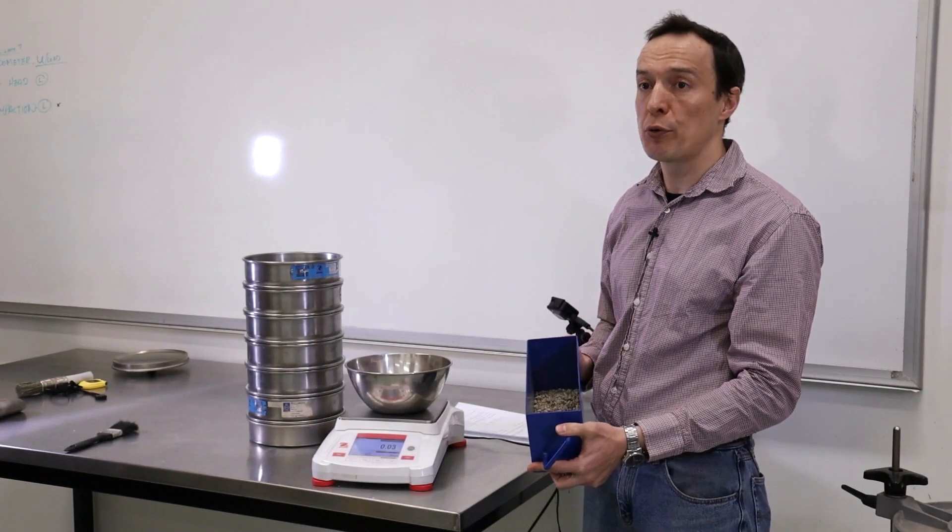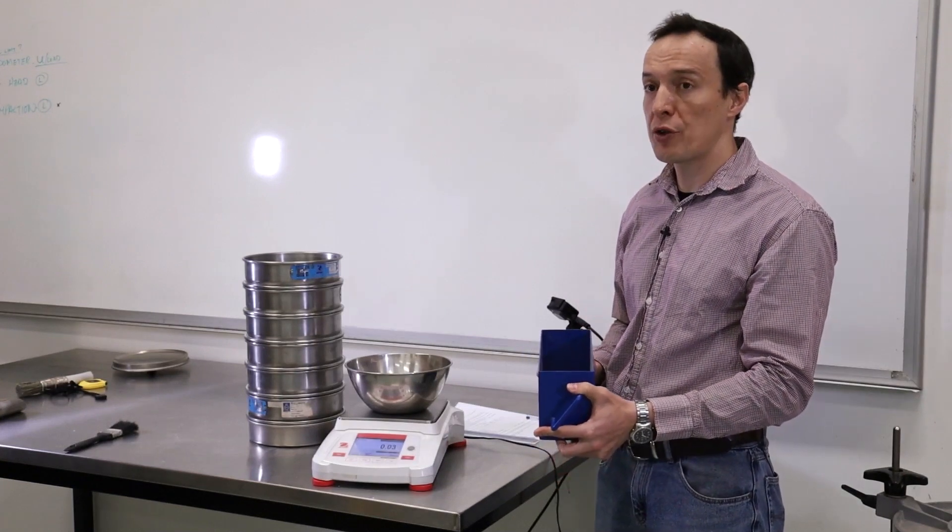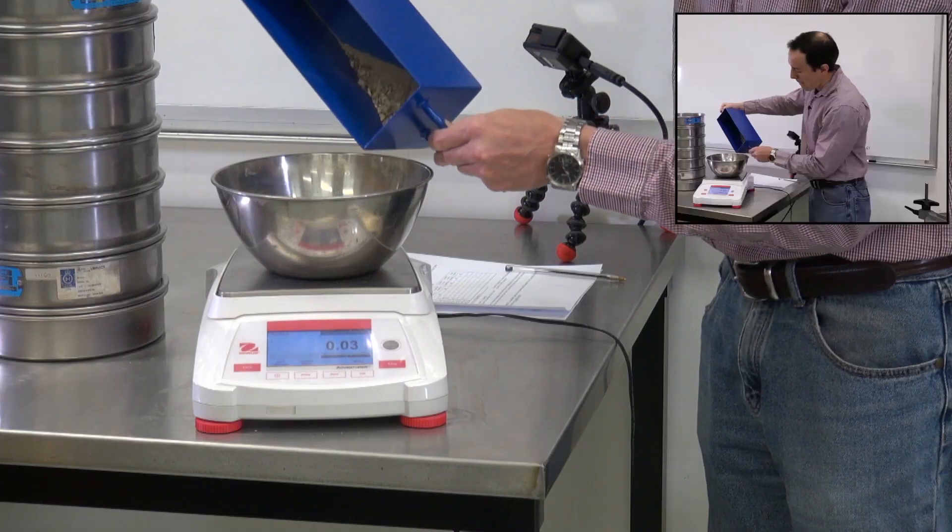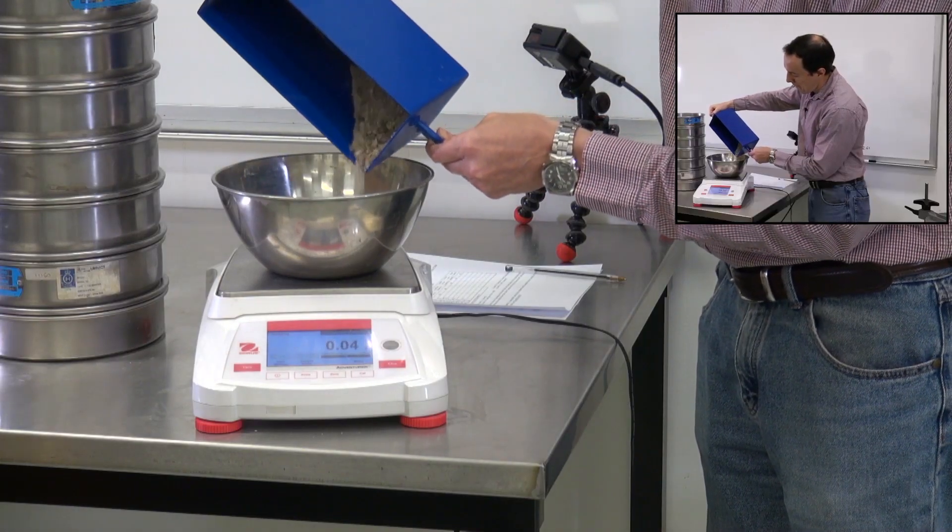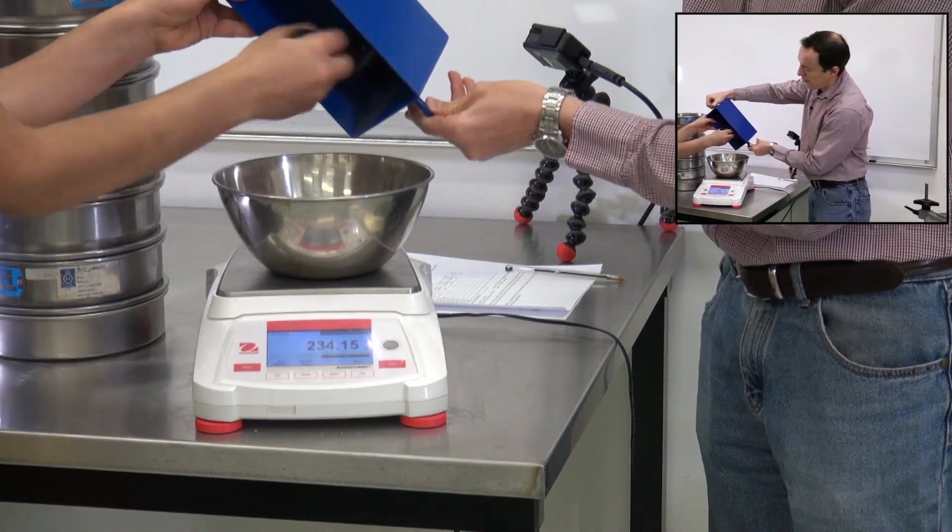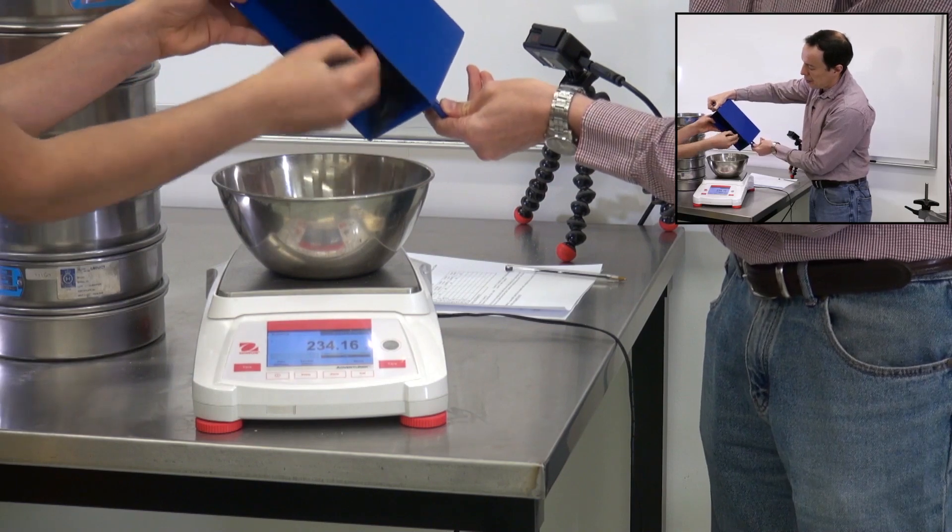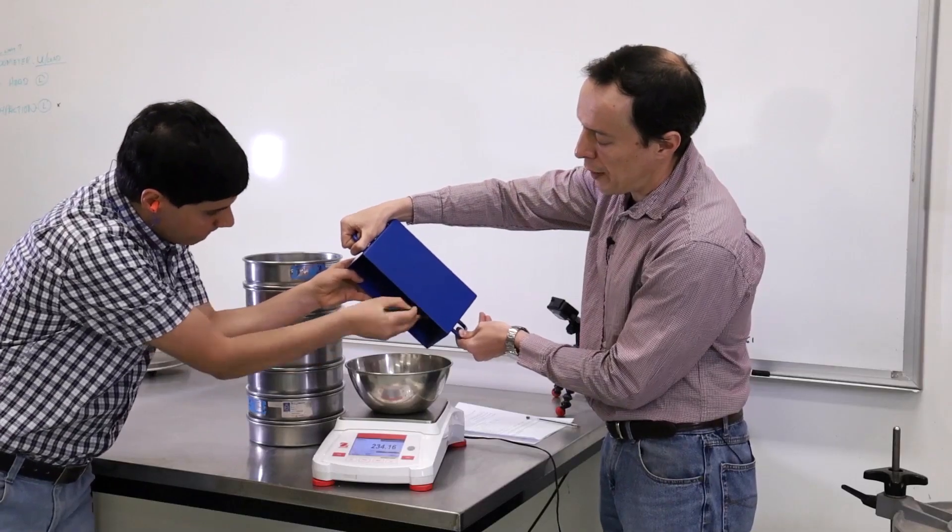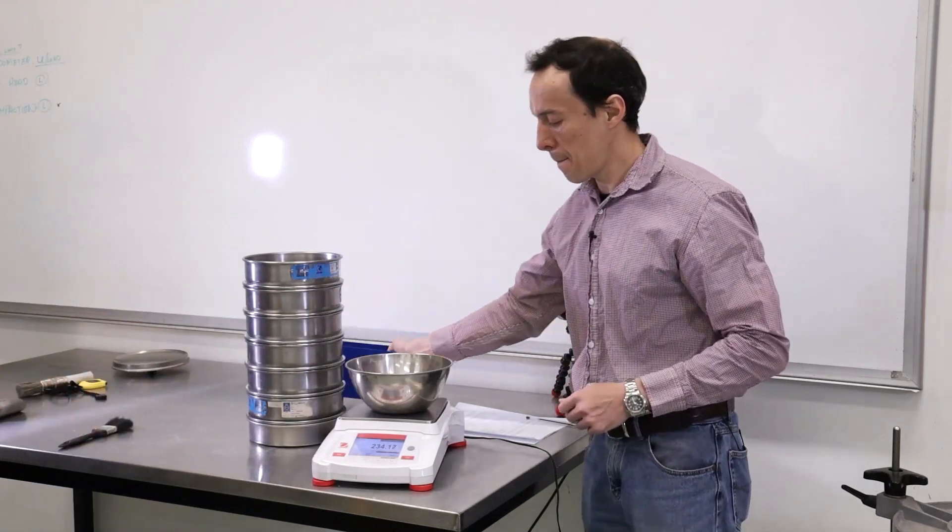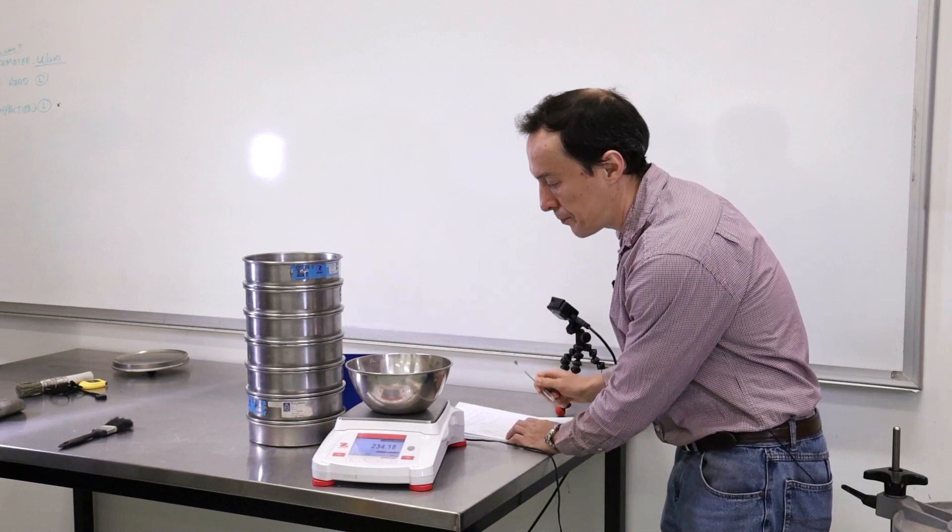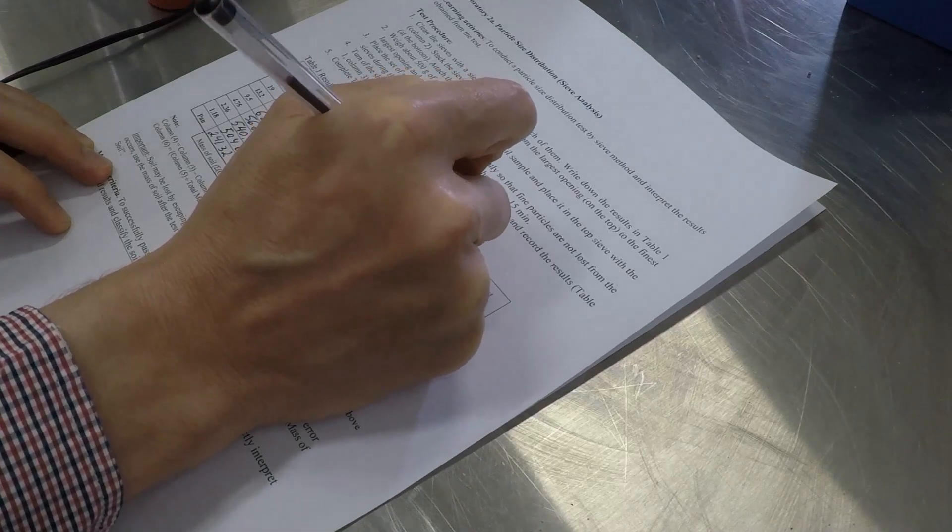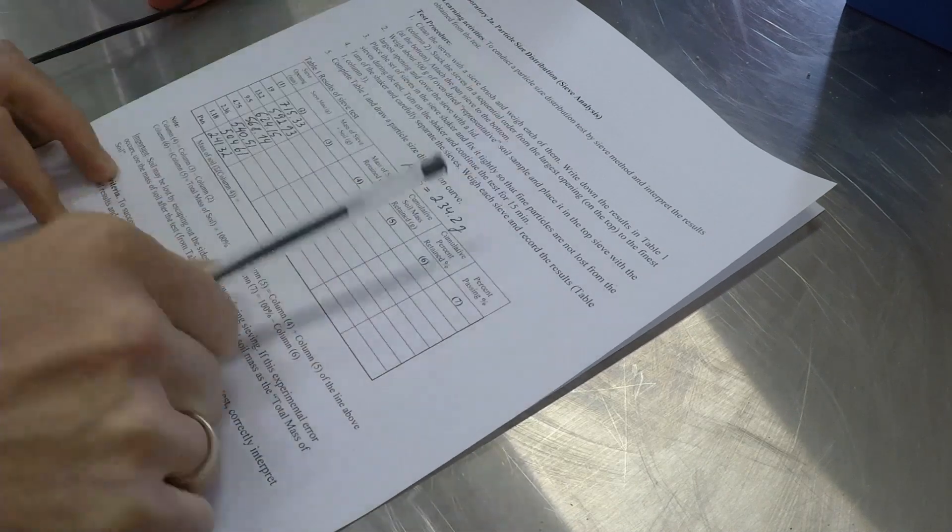This is a subsample that we will use for the test. First, we'll measure the mass of it. It should be about 250 grams. We'll make sure that all fines will go in the soil, back in the soil. It will make 234 grams of the sample.